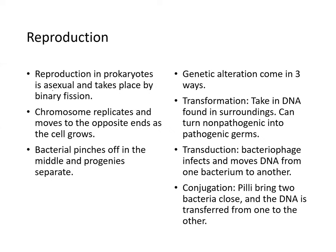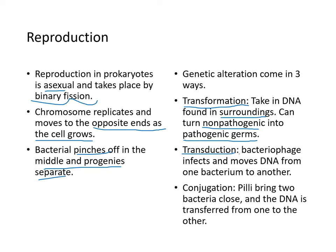Reproduction in prokaryotes is asexual and takes place by binary fission: the chromosome replicates and moves to opposite ends as the cell grows, then pinches off in the middle. Genetic alteration in prokaryotes occurs three ways: transformation (taking in DNA from surroundings, which can turn non-pathogenic bacteria pathogenic), transduction (bacteriophage moves DNA from one bacterium to another), and conjugation (pili bring two bacteria close and DNA transfers between them).